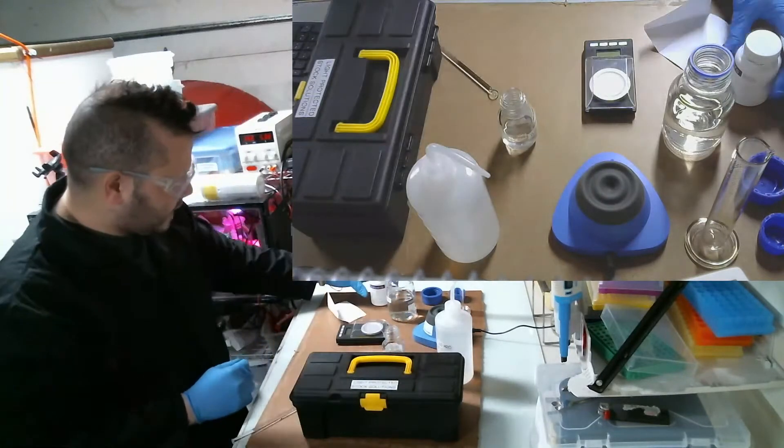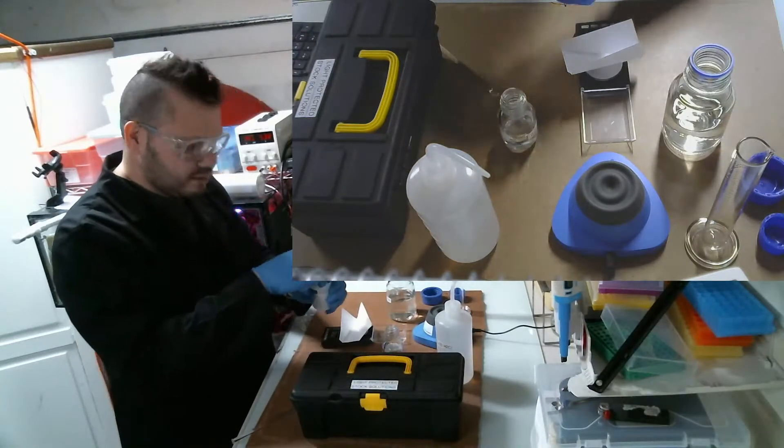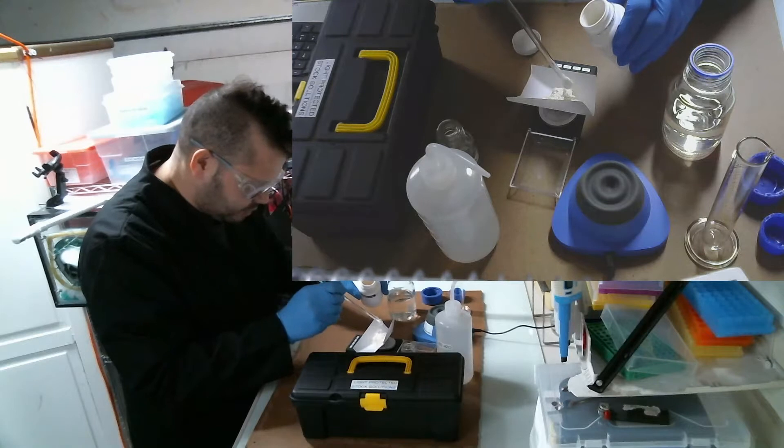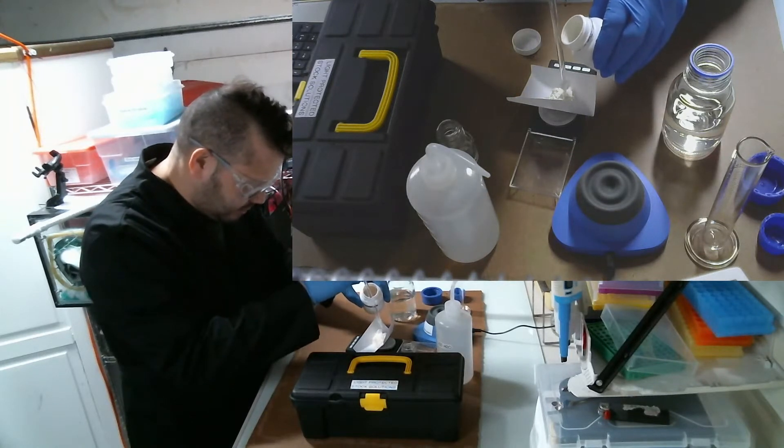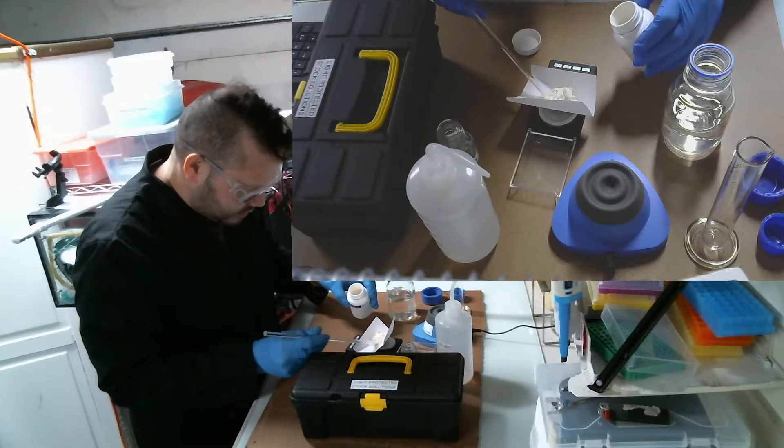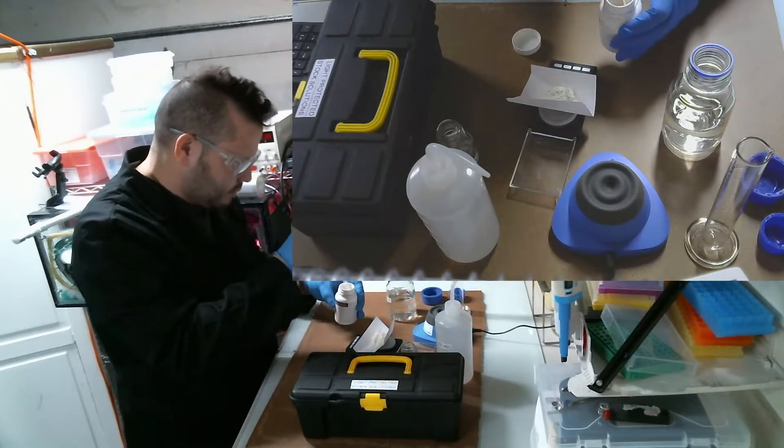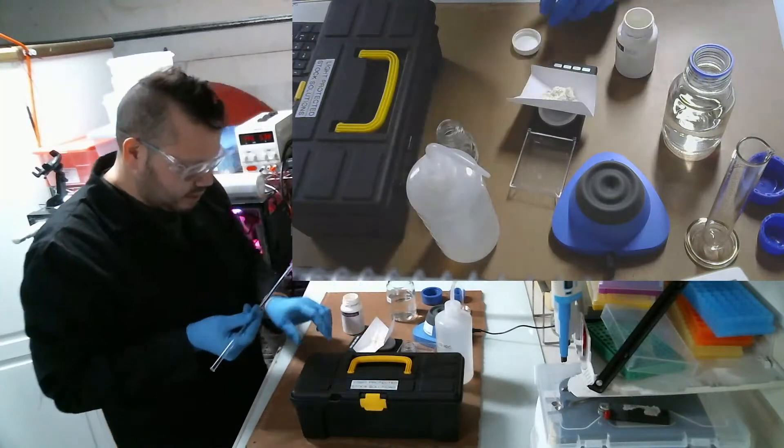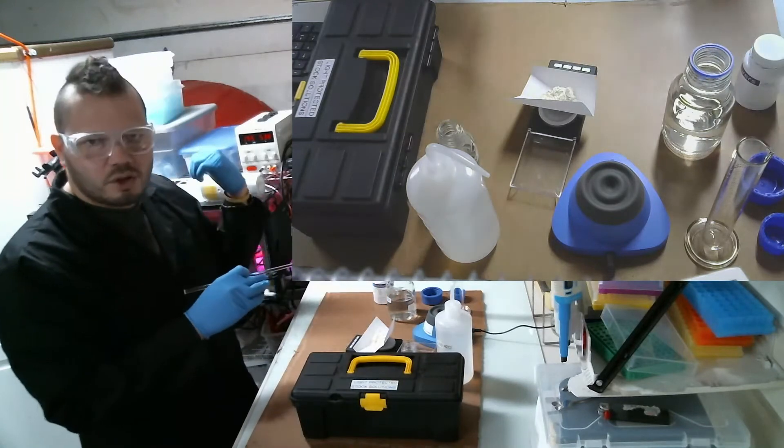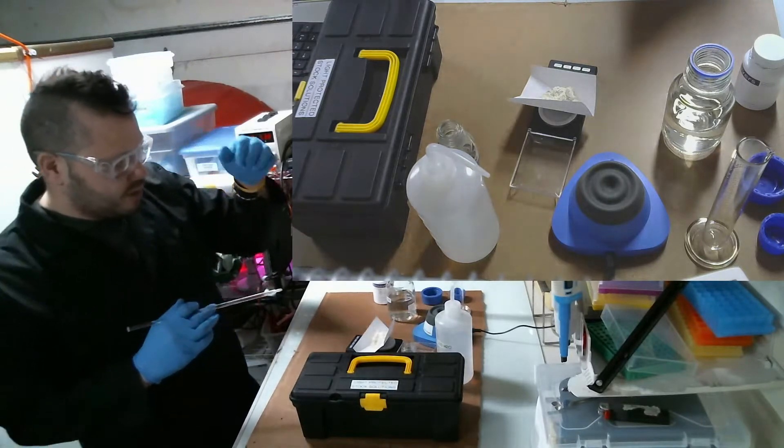So now that I've done that, I need 2.5 grams of this indoleacetic acid. The concentration is very specific. There's a reason why I need that concentration, and the reason for it is because I'm looking to add 10 micrograms of indoleacetic acid per milliliter of algae solution or algae culture area. And there's 500 milliliters there.